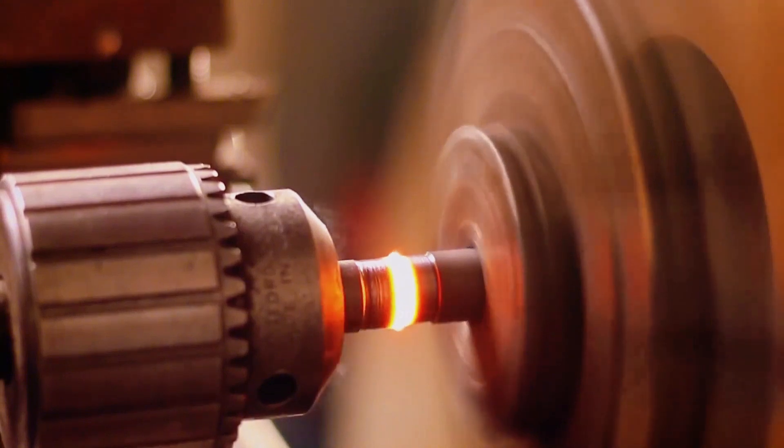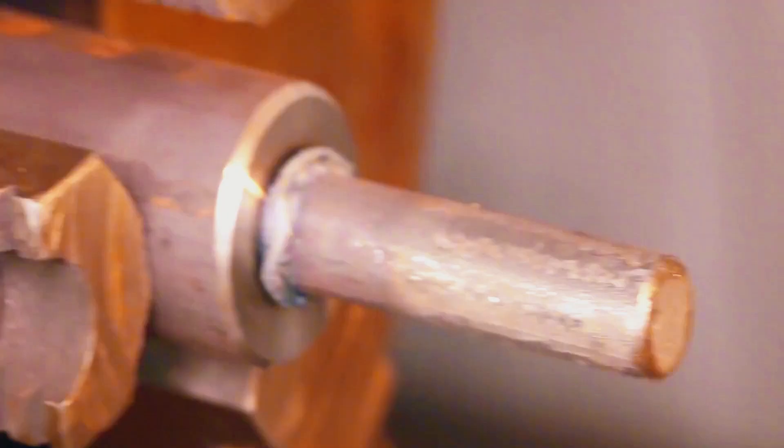When metals rub together, high temperatures are generated. As one side pushes forward, it forces the two rods together. Finally, the excess is ground off.